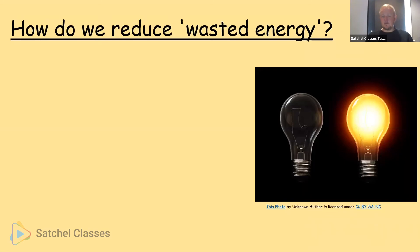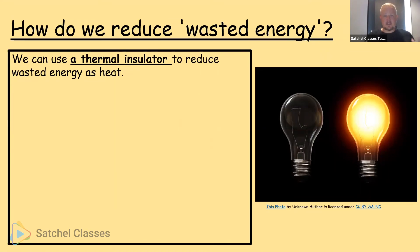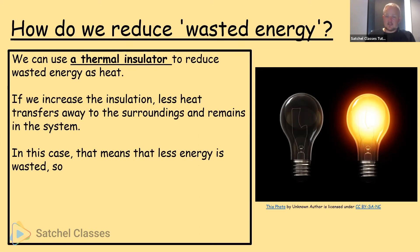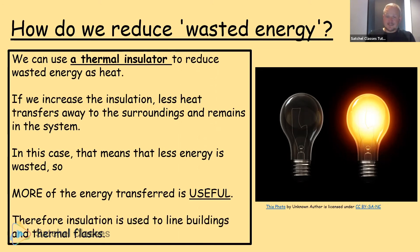How can we reduce wasted energy? We can use a thermal insulator to reduce energy wasted as heat. Whenever you put the heating on at home, you close your windows, close your curtains, and if you have a very modern house you might have thick insulation in your walls and loft. All these act as thermal insulators to prevent heat escaping to the surroundings. If we increase the insulation, less heat transfers away and it remains in the system, meaning less energy is wasted. Insulation is used to line buildings and thermal flasks.